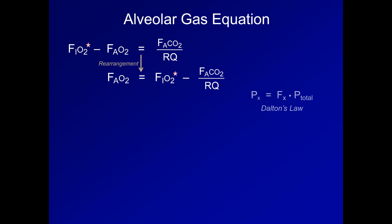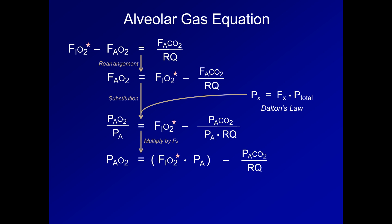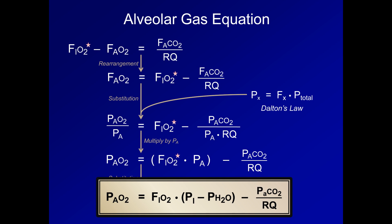We are going to bring in Dalton's law once more and substitute for the F.A.O2 and F.A.CO2. Multiply everything by the total alveolar pressure. Now we're almost there. Just substitute in the expression for F.I.O2 star to get this. Since the total inspired pressure is equal to the average total alveolar pressure, these two variables cancel out. This leaves us with a familiar form of the alveolar gas equation.